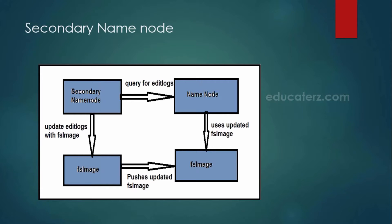We also have something called a secondary name node. What is the purpose of the secondary name node when I have the name node already in place? When many users are placing files and you are doing many changes, there is a chance that your edit logs keep on growing. Once they increase, there is a chance they might fill your main memory. Also, whenever you restart your name node, your edit logs are going to be merged with your FS image. In case you have a huge amount of edit logs, your restart also takes a lot of time. To avoid all such problems, we have something called a secondary name node.